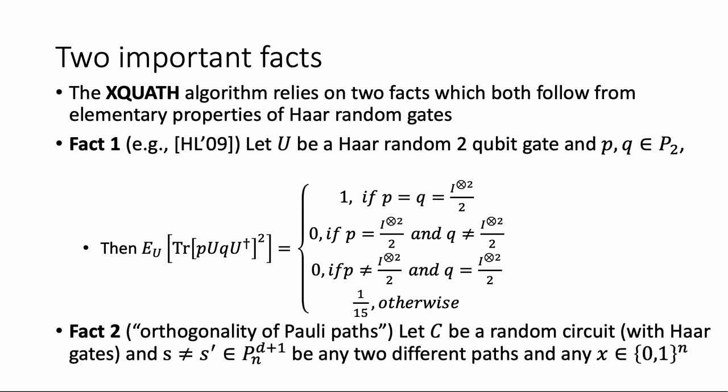Fact two is orthogonality of Pauli paths: if C is a random quantum circuit with Haar random gates and you have two paths S and S-prime — D+1 tuples of N-qubit Pauli operators — then the expectation of the product of the values of these paths is zero. Each of these facts has less than a page proof. So Fact one says that squared Pauli transition amplitudes for Haar random two-qubit gates have very restricted values. Fact two says that for any two different paths, the product of their values is zero in expectation.